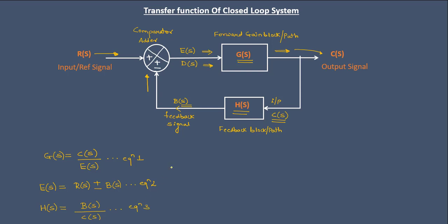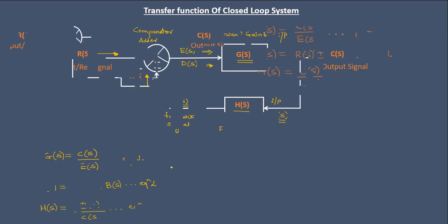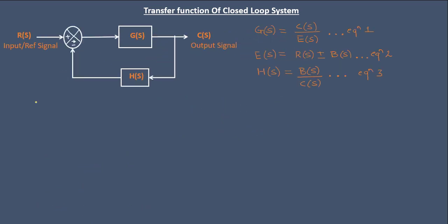Now with these three basic equations, it is very easy to find the overall transfer function of this closed loop system. Our aim is to find the closed loop transfer function, written as CLTF, given by T = C(s) / R(s).